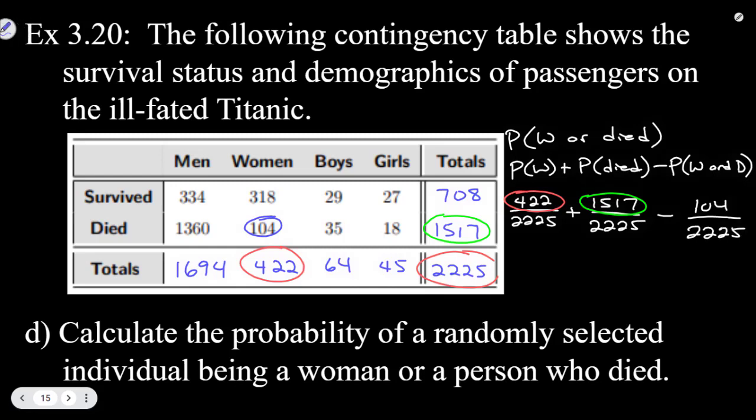So if we add up those numerators, 422 plus 1517 minus 104, that gives us 1835 over 2225, and that gives us a probability of 0.825 when we round that off to three decimal places. So that would be our probability for selecting a woman or a person who died.